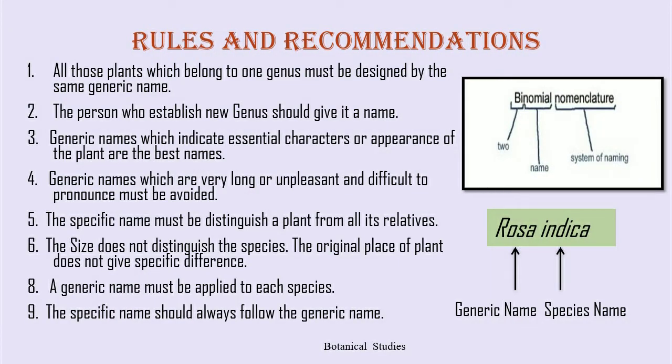Rules and recommendations of ICBN: All plants which belong to one genus must be designated by the same generic name. The person who establishes a new genus should give it a name. Generic names which indicate essential characters or appearance of the plant are the base names. Generic names which are very long or unpleasant and difficult to pronounce must be avoided. The specific name must distinguish a plant from all its relatives. The size does not distinguish the species, and the original place of the plant does not give specific difference. The generic name must be applied to each species, and the specific name should always follow the generic name.